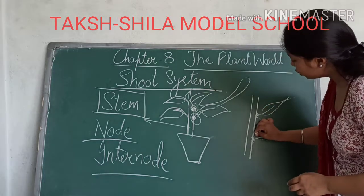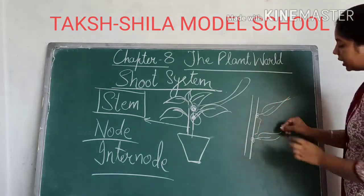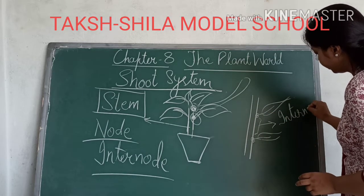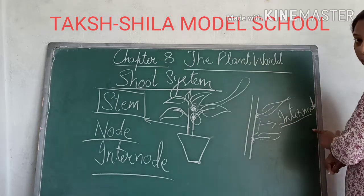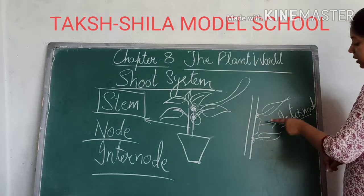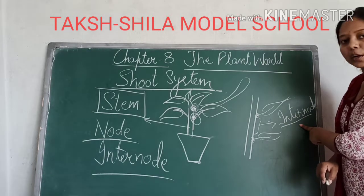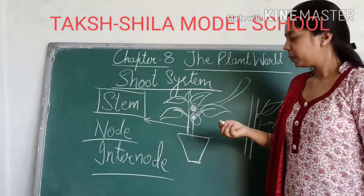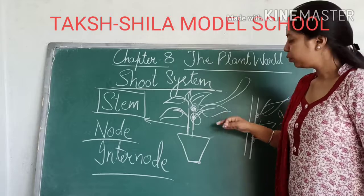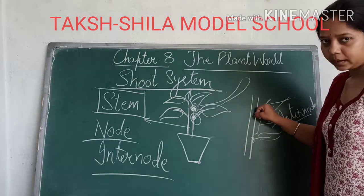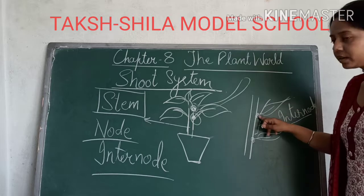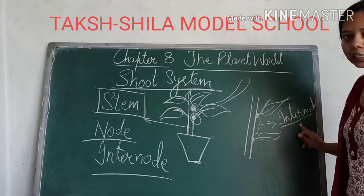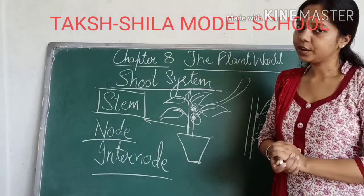In between two nodes, the region that is present is known as the internode. So from the node region, leaves and branches arise. Fruits and other things on the plant — wherever they mainly arise from — that is the node region. And between two nodes, the region is known as the internodal region.